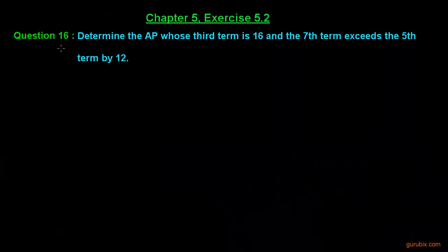Here is question number 16 of exercise 5.2 of Chapter 5. This question says: determine the AP whose third term is 16 and the seventh term exceeds the fifth term by 12.